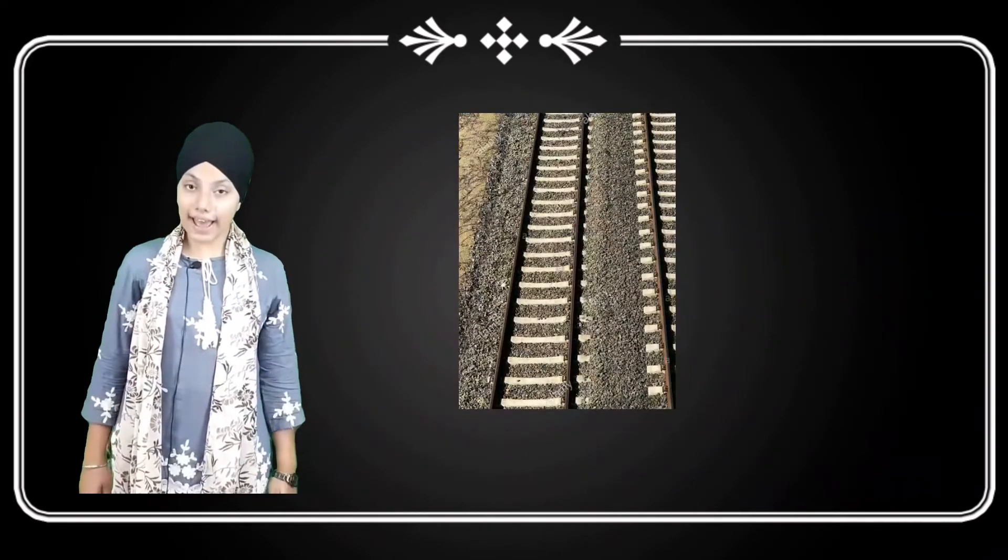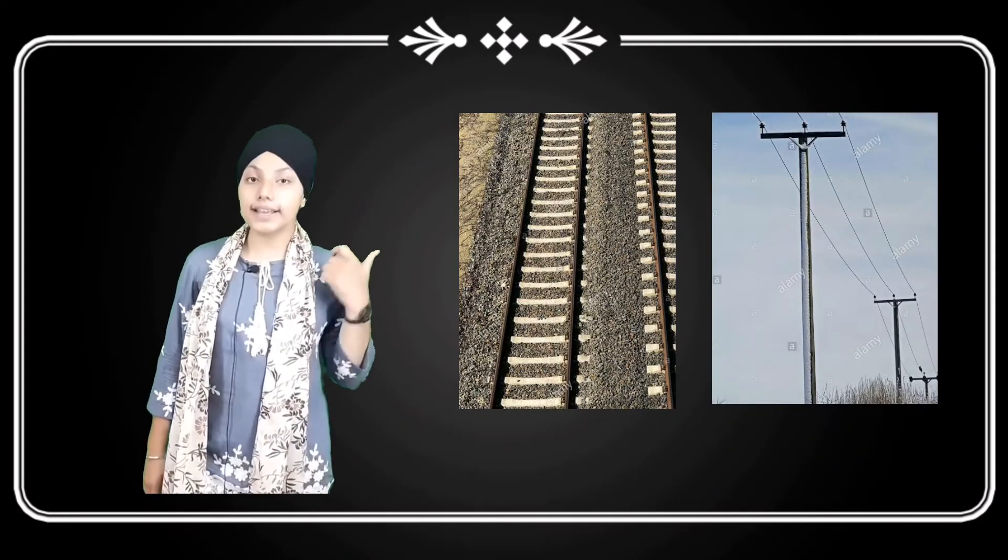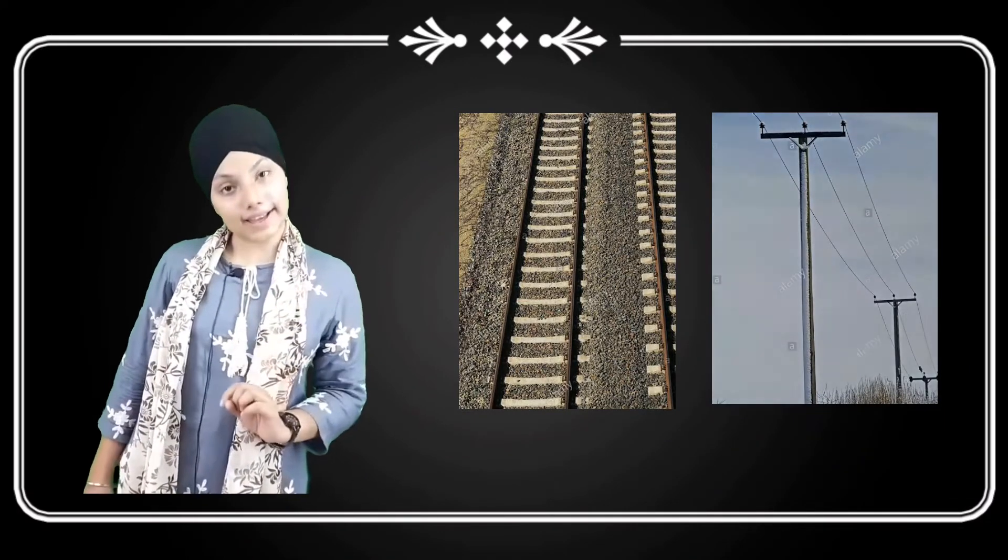For example, railway tracks and wires coming from electricity poles are examples of parallel lines.